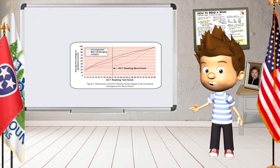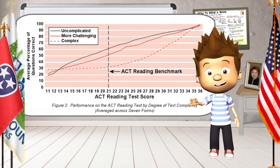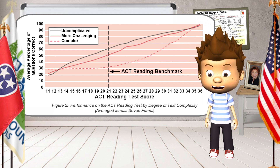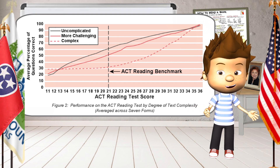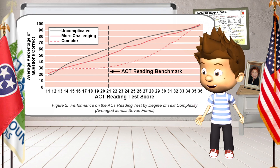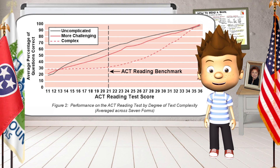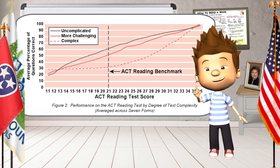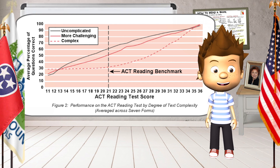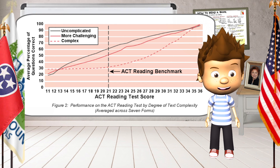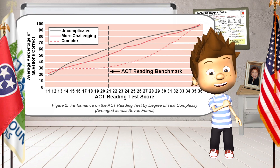This graph shows that students who received a certain score on the reading section answered about the same number of questions correctly on easy text and more difficult text. However, students who scored an 11 and students who scored a 20 all answered about 30% of the questions correctly on complex text. The percentage of correct answers rises dramatically on complex text for students who scored above the 21 benchmark. Being able to read complex text is the one indicator that shows this, so this skill is essential to scoring well on the reading section.